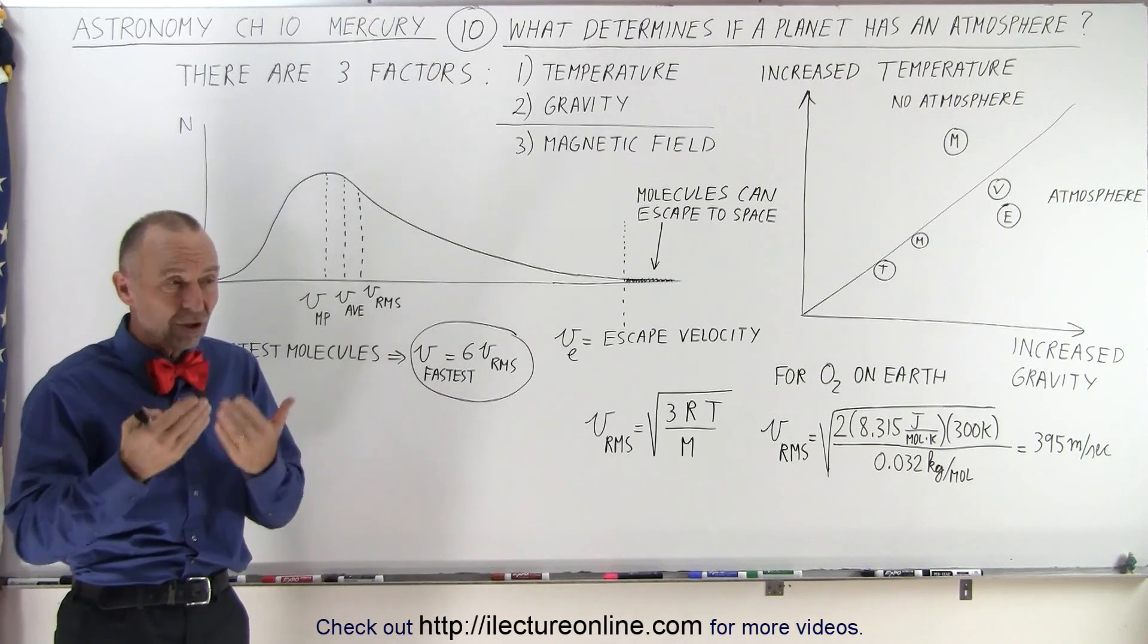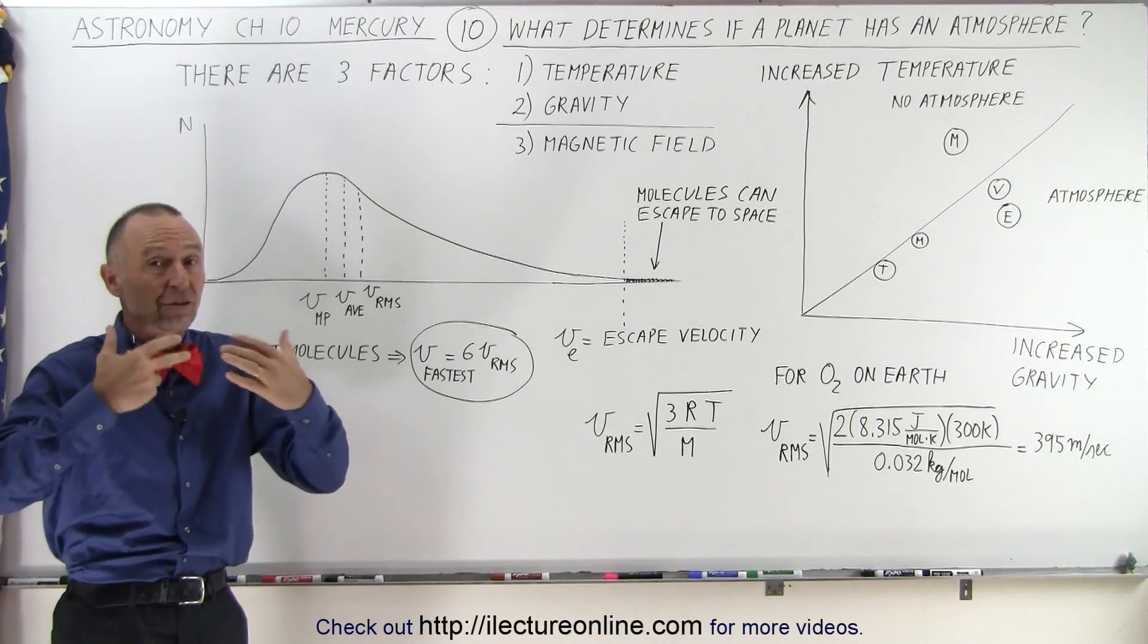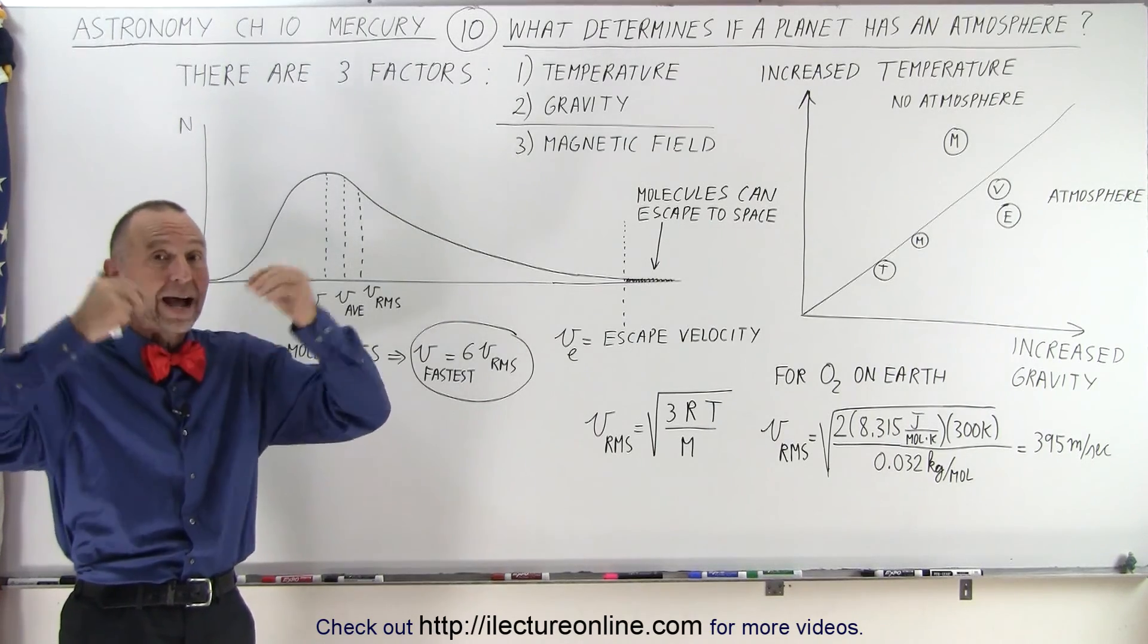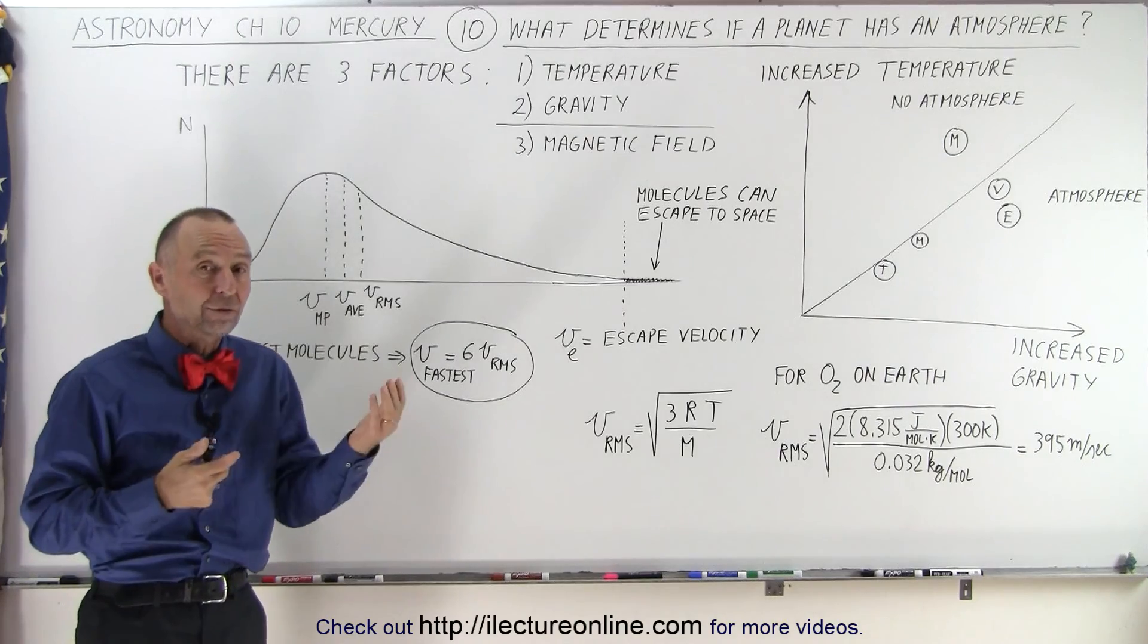So it's kind of a toss or a fight between the temperature. The higher the temperature, the more likely they'll have a higher speed to get away from the planet, and the greater the gravitational force, the more likely they will stay.